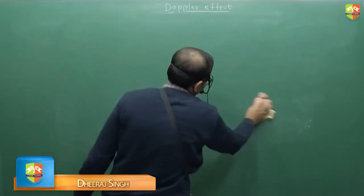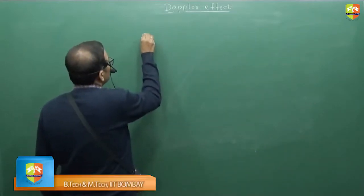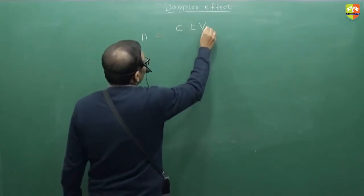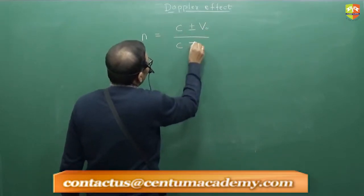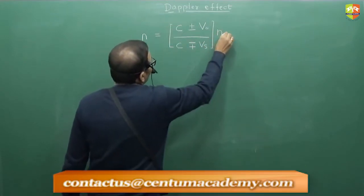Let's generalize the formula first. The general formula of the apparent frequency is: n equals c plus minus velocity of observer divided by c minus plus velocity of source times n0.